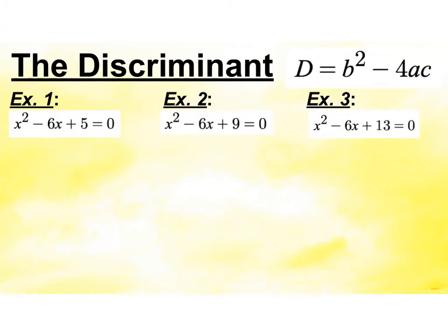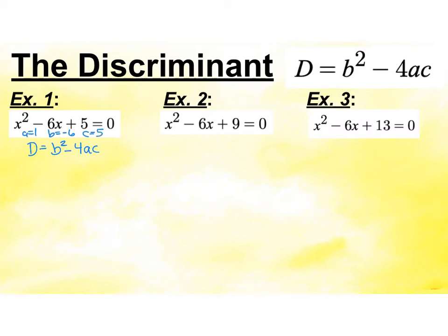We're going to try these examples. Before we do, I want you to take a look at the three equations. They're all in standard form, they're all set equal to zero, they start with x squared minus 6x, and then it's that c value that's a little bit different. I purposely put them together on the screen so we can investigate and notice. I'm going to find the discriminant of example one, writing down b squared minus 4ac. Note that a is 1, b is negative 6, and c is 5.